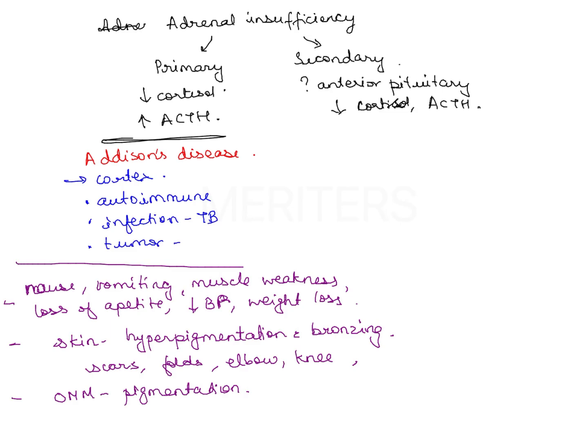Pigmentation is caused by increased levels of ACTH, which rise in response to low levels of corticosteroids. Laboratory testing shows low concentration of sodium and glucose, increased serum potassium, and decreased urinary output of certain steroids.